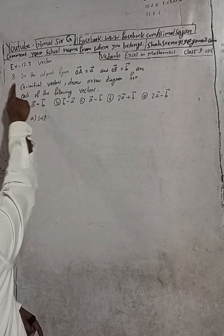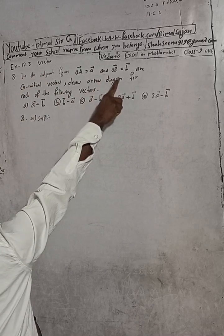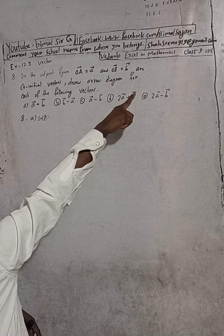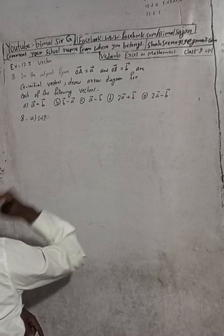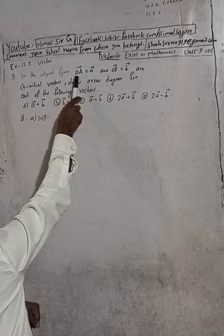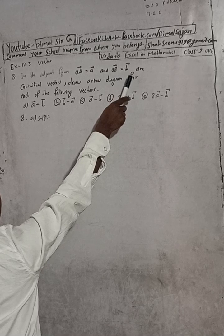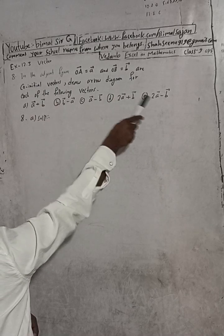The solution here - the question is number 8, exercise 12.3, vectors in mathematics for class 9. Don't forget to check the playlist on Bimal Search. The question is: in the adjoining figure, OA vector is equal to A vector and OB vector is called B vector, which are co-initial vectors. Draw arrow diagram for each of the following vectors.